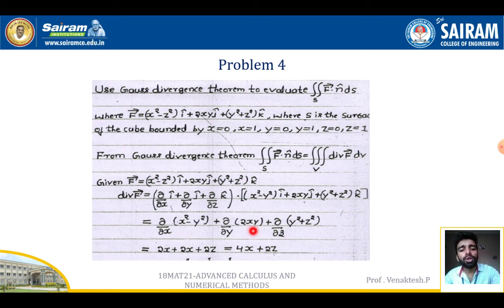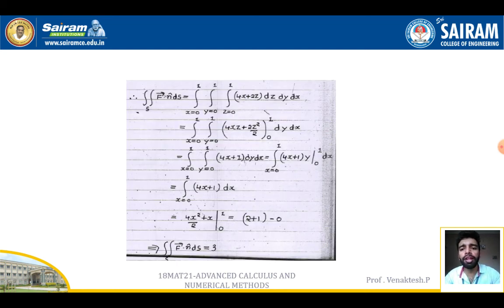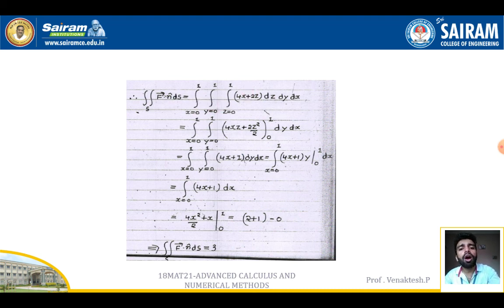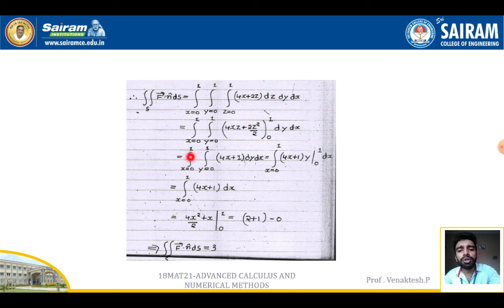Substituting into the triple integral: ∫₀¹ ∫₀¹ ∫₀¹ (4x + 2z) dz dy dx. Integrating with respect to z: [4xz + z²]₀¹ = 4x + 1. So we get ∫₀¹ ∫₀¹ (4x + 1) dy dx.